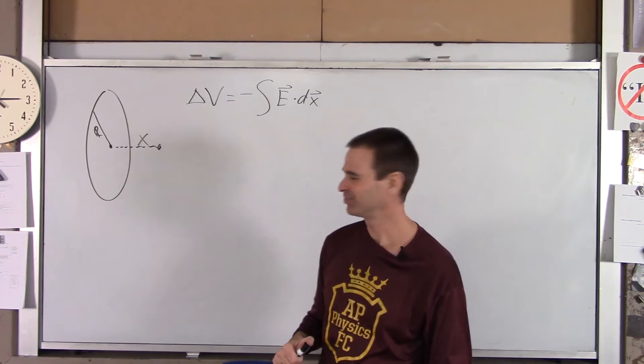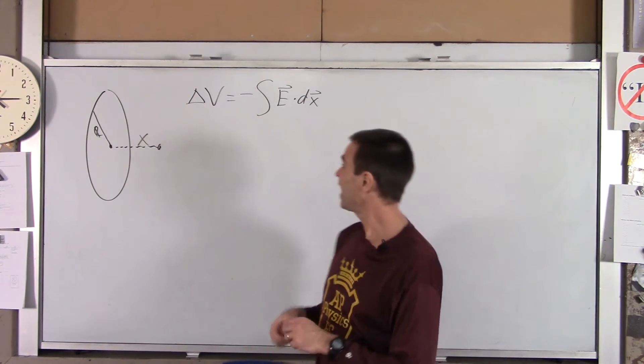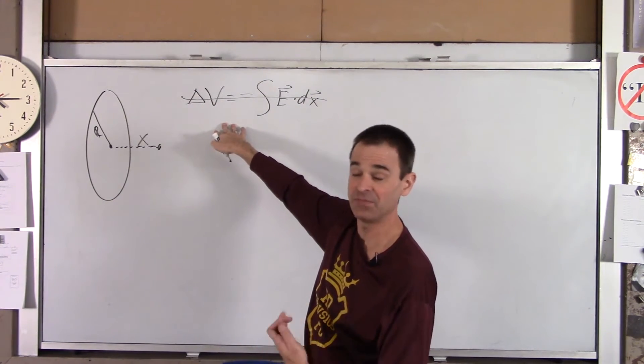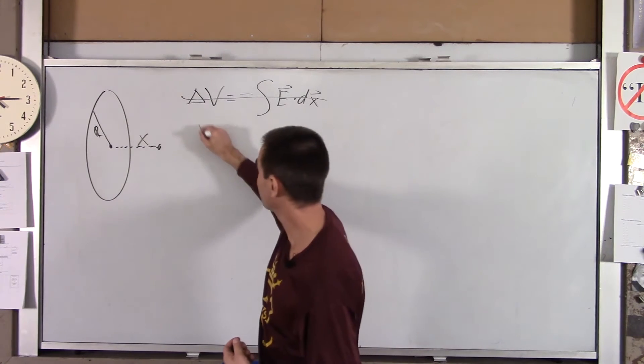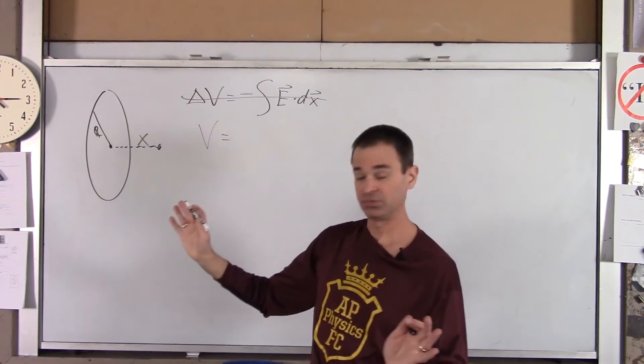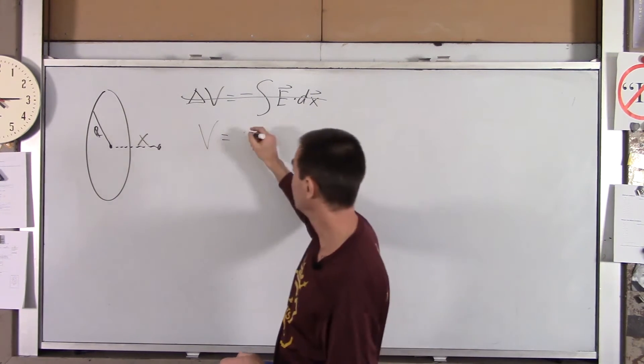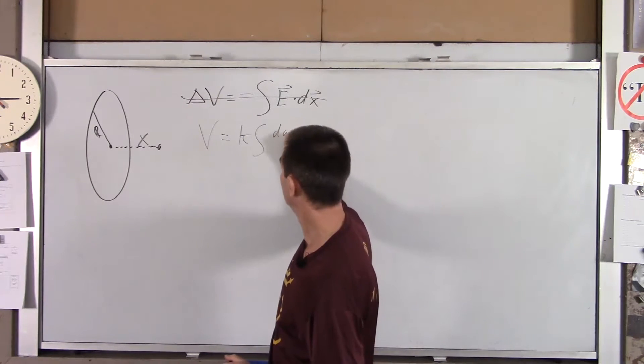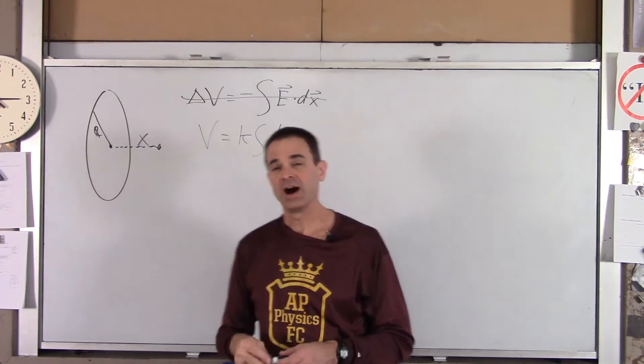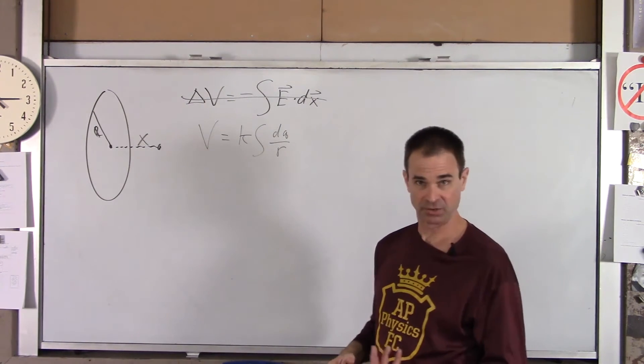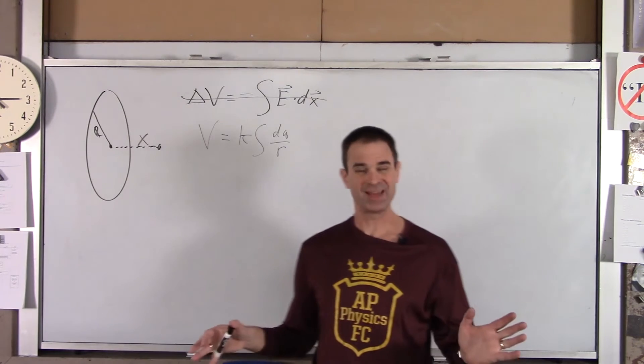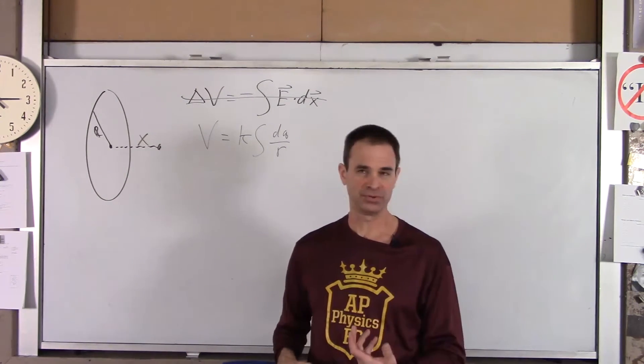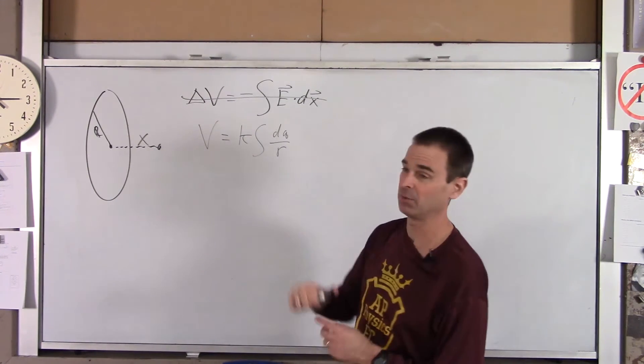I don't remember either. So instead, now by the way, this is a good method if you know E. But since we don't know E, the other method is voltage, in general, absolute voltage, is K, the integral of DQ over R. And we're going to use that in this particular case. So that's the first thing you've got to figure out is which of those two methods should I use to find our voltage? For this particular example, we'll use that one.